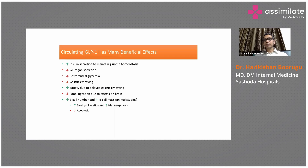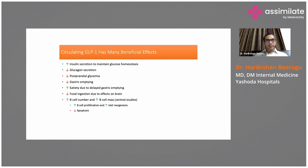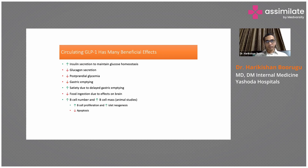DPP-4 inhibitors inhibit this enzyme and prevent metabolism of GLP-1, increasing GLP-1 levels in the body. The effects of circulating GLP-1 include: increased insulin secretion to maintain glucose homeostasis, reduced glucagon secretion, resulting in lower postprandial glycemia. GLP-1 also slows down gastric emptying, increasing satiety. There is also an effect on neurotransmitter function in the brain, which results in early satiety and patients tending to consume less food.